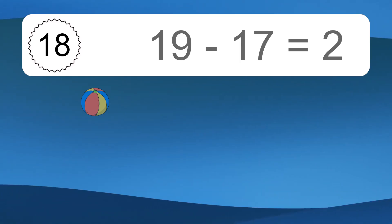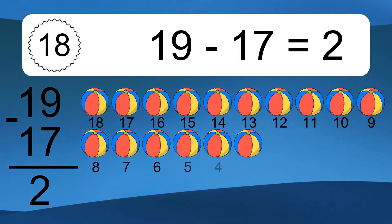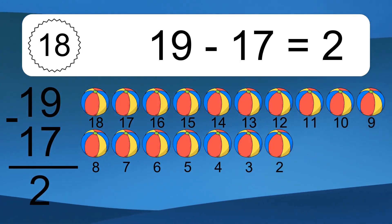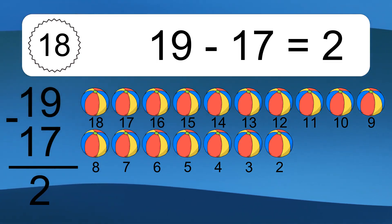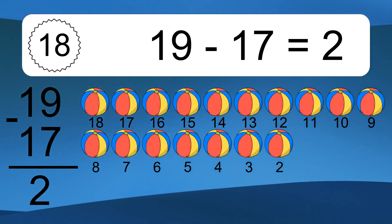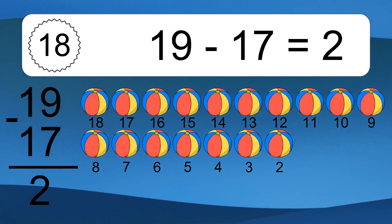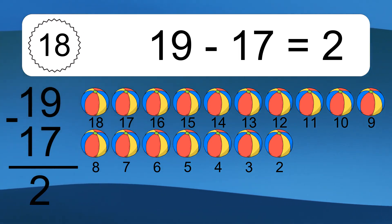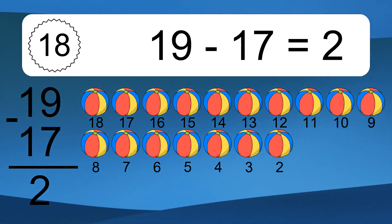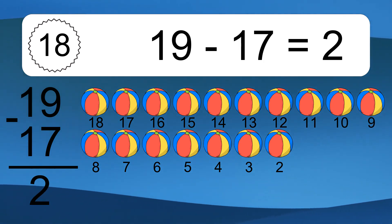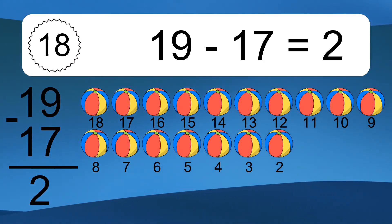19 minus 17 equals what? 19 minus 17 equals 2. Let's count it: 18, 17, 16, 15, 14, 13, 12, 11, 10, 9, 8, 7, 6, 5, 4, 3, 2.